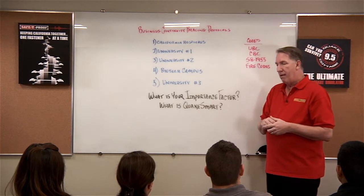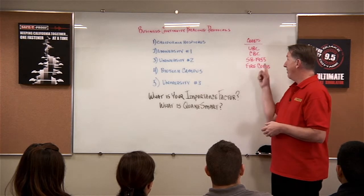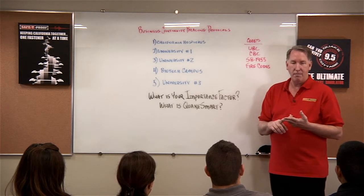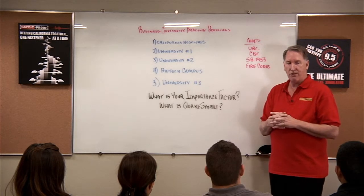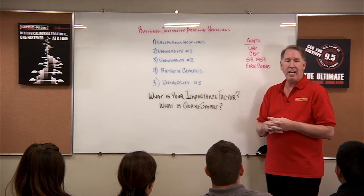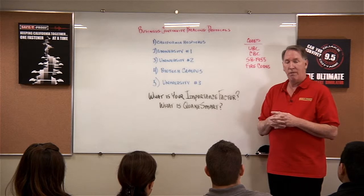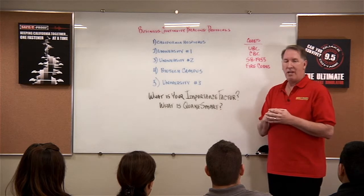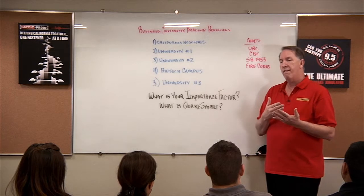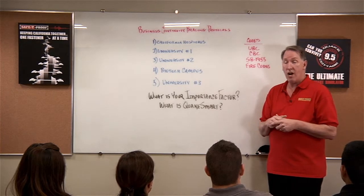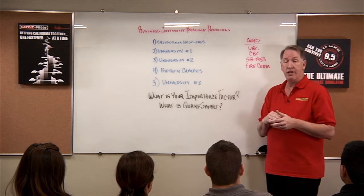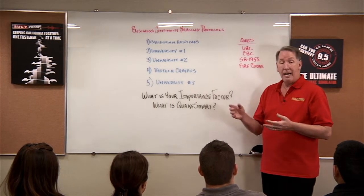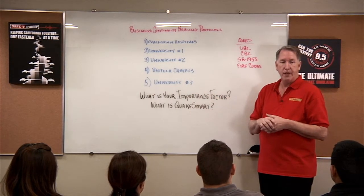How do you determine what items to brace to a 1.5 IP in a California hospital in order to comply with the law? The size of the item, the value of the item, and the location of the item — while being important factors — are all trumped by how the item is used. You may have a small microscope located in the back of a room, but if that microscope is critical to the operation of that lab or room, by law it must be secured. It's the function of the item that drives whether or not it is secured, and the engineering is developed to an IP of 1.5.